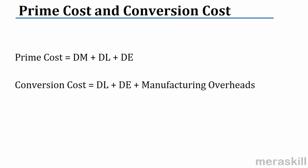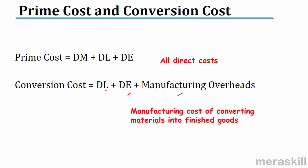A short note on prime cost and conversion cost. Prime cost is direct material consumed plus direct labor plus direct expenses. Conversion cost is the cost of converting material into finished goods — that is direct labor plus direct expenses plus manufacturing overheads. Importantly, conversion cost does not include the cost of materials.